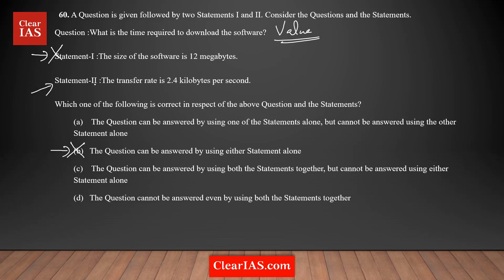Now let's analyze statement two individually. Statement two says the transfer rate is 2.4 kilobytes per second. But that is not sufficient to calculate the download time either, because we don't know the size of the software. So statement two alone is also not sufficient. At this stage we can eliminate option A as well.